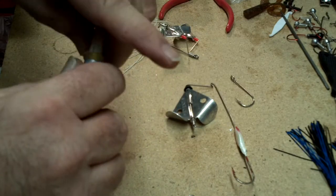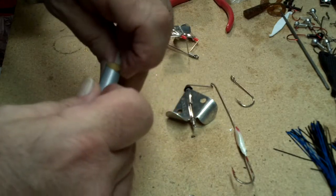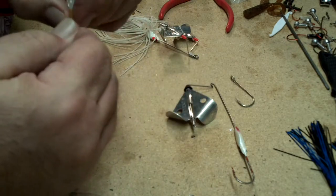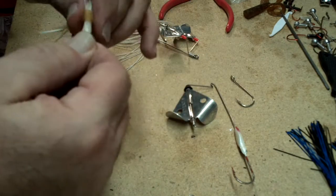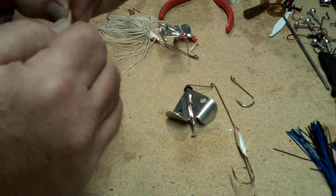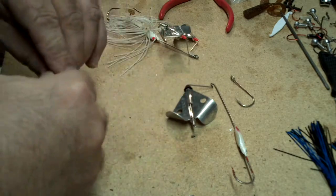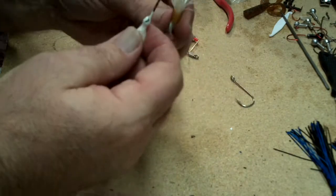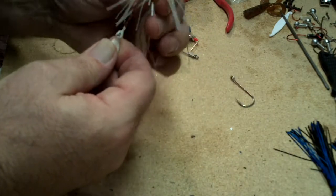Drop that into the tube, pull the little rubber keeper over the top of it. Then I can position it on there where I want. Now I just slide this back onto the buzzbait.